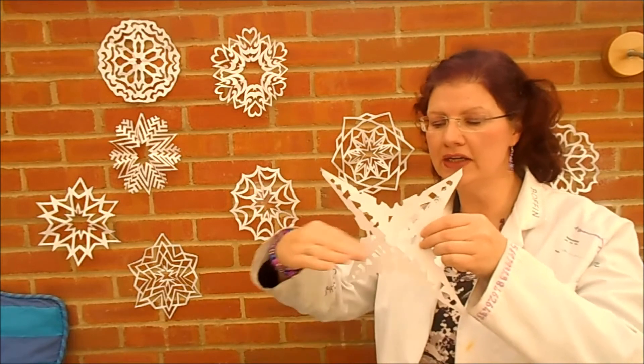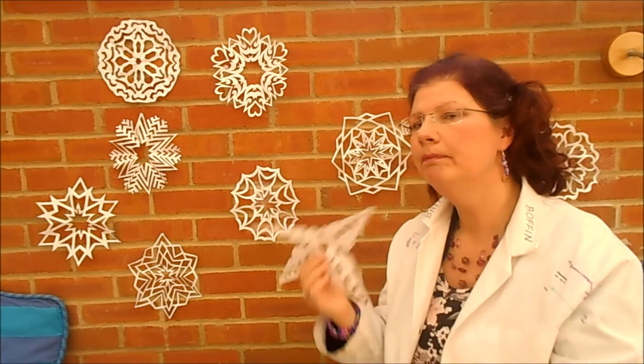So we've got a vertical line, a horizontal and two diagonal lines. But, you may well know that snowflakes don't actually look like this.